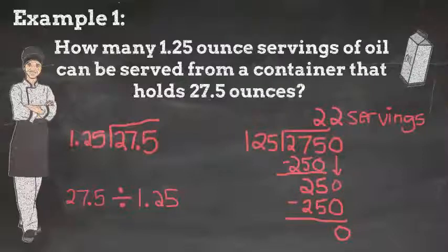And the last step is to check if our answer is reasonable. 1.25 ounce servings is a little over 1 ounce. So when I multiply that by 22, I should get a little over 22. So it makes sense that the total from the container is 27.5 ounces.